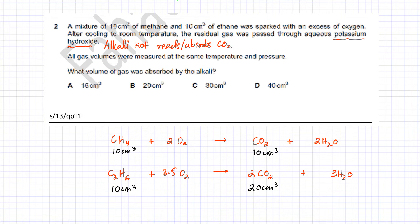We figured out the amount of gas produced by both methane and ethane. We're only interested in the carbon dioxide gas produced, which equals the total volume of 30 cm³. This amount of gas is going to be absorbed by the alkali because this is an acidic gas. The answer to this question is option C.